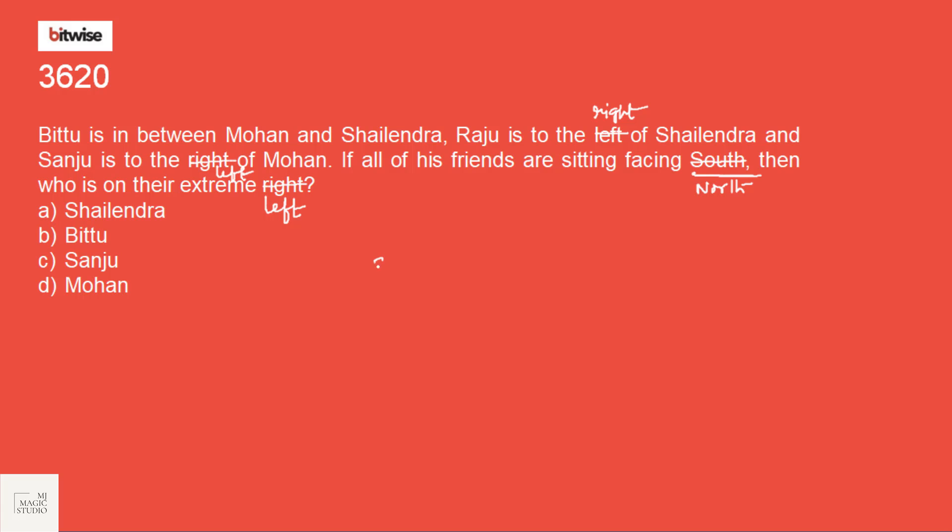Simple. Raju is to the right of Salindra. Salindra, right is Raju. And Sanju is to the left of Mohan. Bittu is between Mohan and Salindra. Salindra, Bittu, Mohan. Sanju is to the left of Mohan. Left of Mohan is Sanju. Done. Then who is at the extreme left? Sanju is to the extreme left. Option C fits in.